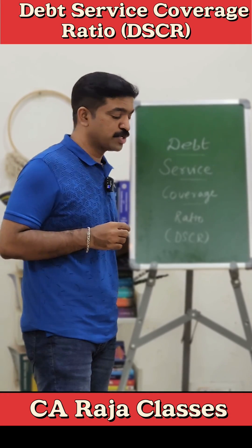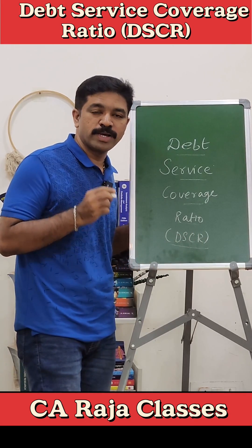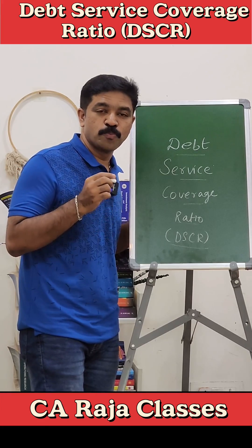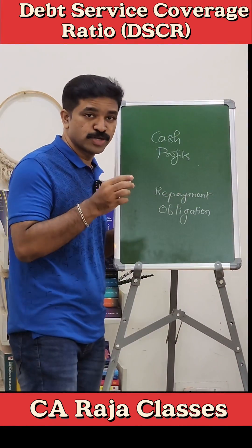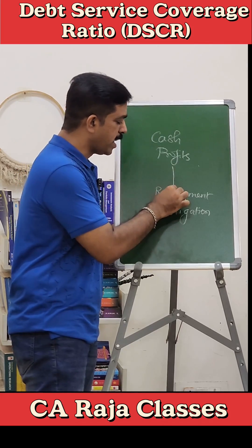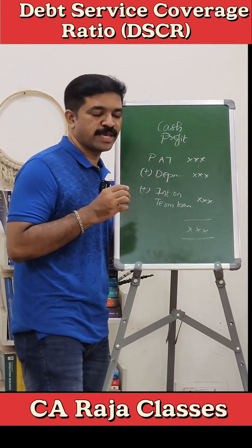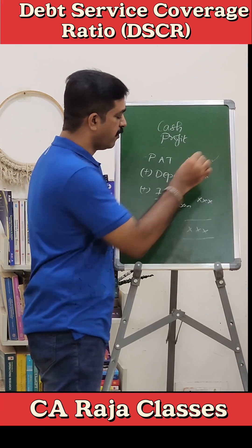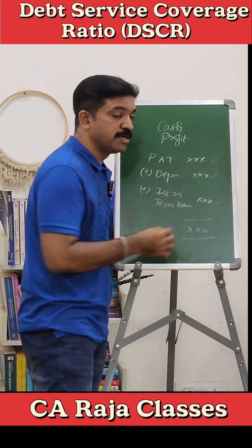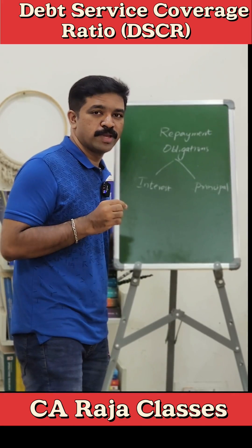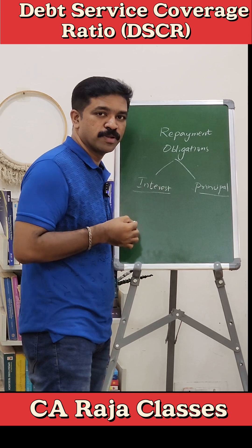Debt Service Coverage Ratio is a very important ratio used by lenders and bankers to measure the repayment capacity of the borrower. This ratio compares cash profits with repayment obligations. Cash profit is calculated as profit after tax added back by depreciation and interest on term loans. Repayment obligations comprise interest on loans as well as the principal.